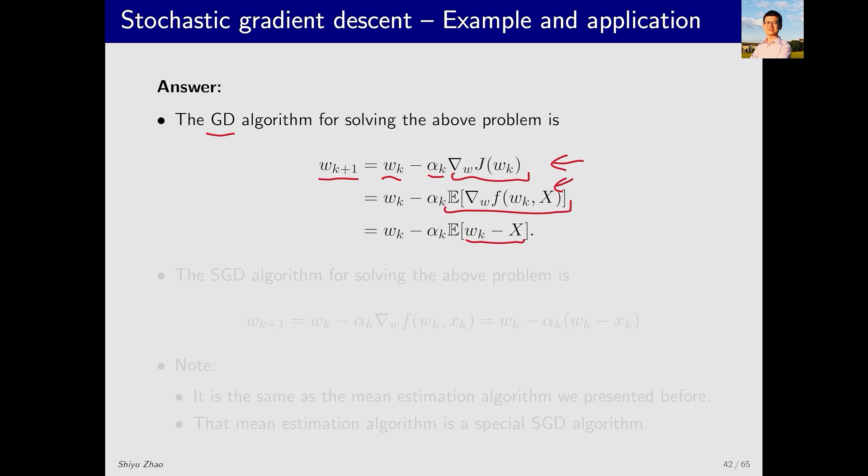Then what is the corresponding SGD algorithm? It is actually very simple. We can remove the expectation here and directly replace it with w_k minus x_k. This is the corresponding SGD algorithm. As you can see from the above process, we first understand gradient descent, knowing that it contains an expectation. Then we remove this expectation to obtain SGD.